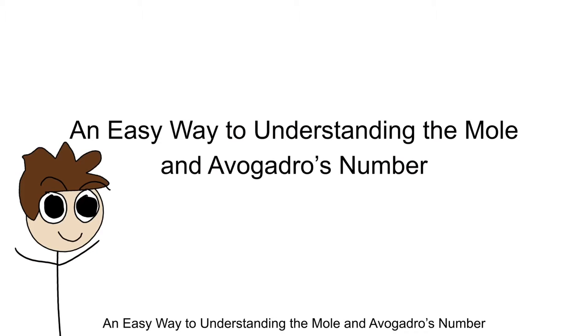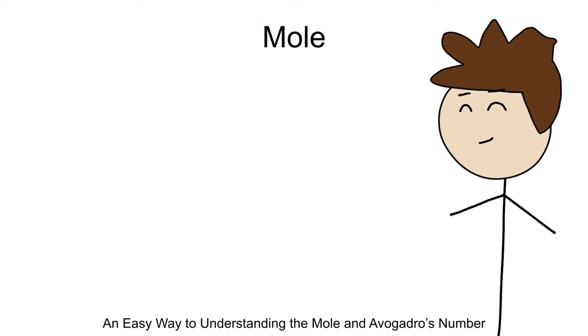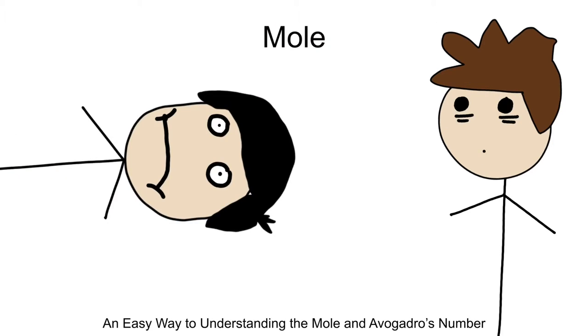All right, today we're going to branch off from acids and bases just for a minute so we can talk about a concept that many students find difficult to understand. In order for an acid or a base reaction to occur, it often depends on the number of protons available. Whoa, wait a minute. That's got to be a huge number, right?